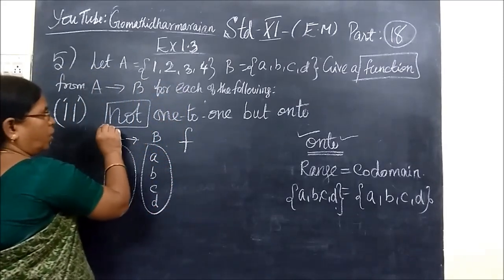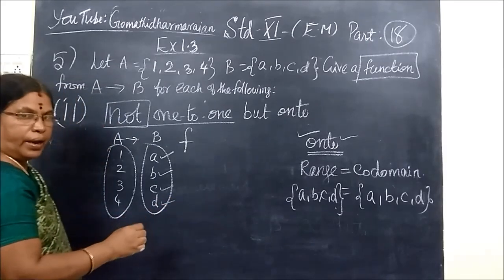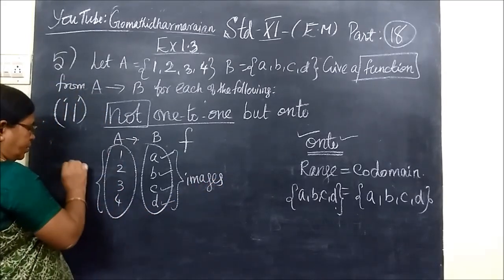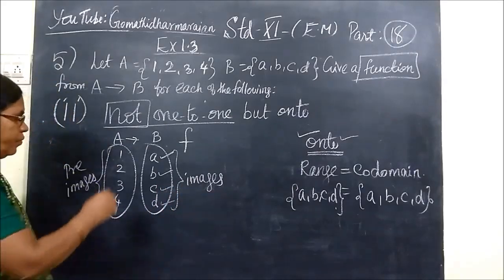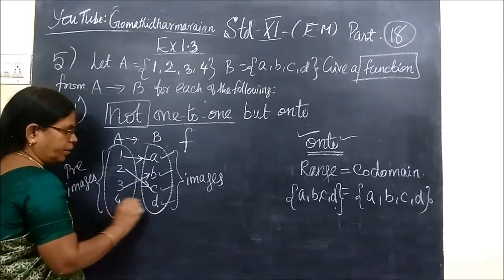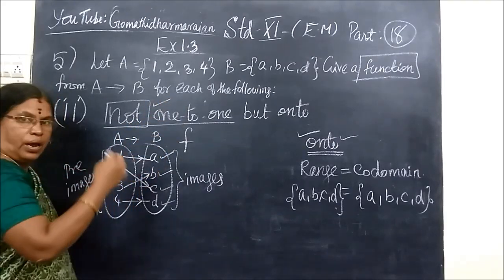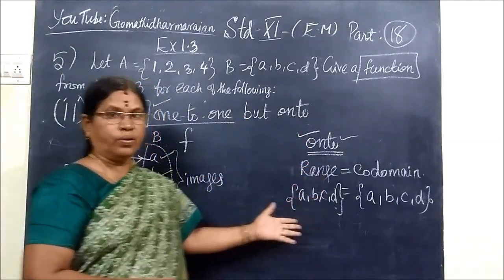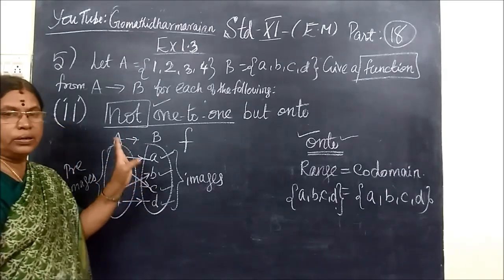But here it is given not one-one. We can't construct such a function. Because the codomain is {A, B, C, D} and every element in A must be associated to any one element. So it must be onto. But if it is onto with 4 elements in domain and 4 in codomain, it will definitely be one-one only. So we definitely can't construct such a function.